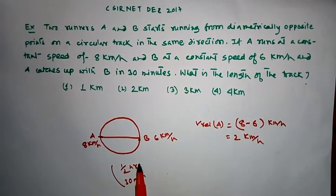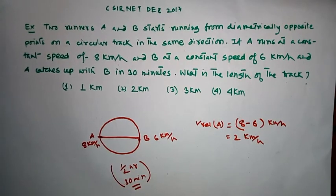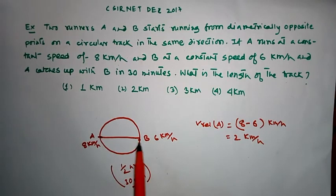It is said that in 30 minutes, that is half an hour, A catches B. Therefore, in order to reach B, A is supposed to travel half of the track.